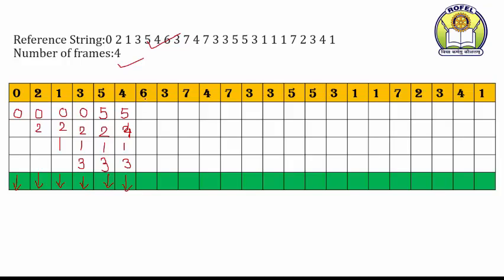Now again page number 6 — 6 is also not in the memory. The available pages are 5, 4, 1, 3. 4 ko abhi humne use kiya hai, then 5 ko bhi use kiya hai, then 3, and 1 sab se purana hai is mein. Page number 1 is the oldest so we can replace page number 1. Frames become 5, 4, 6, 3. There is a page fault.